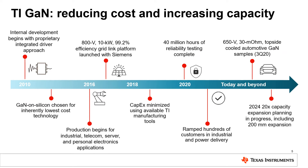TI has a long history with GaN, spanning more than 10 years, with a focus on reducing cost and increasing capacity. TI chose GaN on silicon to enable the lowest-cost, long-term technology, while leveraging existing tools as much as possible to minimize additional capex spending. Initial TI GaN products were first launched in 2016, which included a focus on 800-volt, 10-kilowatt grid-link converters in partnership with Siemens. Since then, hundreds of customers have engaged, ramping across multiple end equipments in industrial and power delivery sectors. This includes telecom rectifiers, server power supply units, charging piles for electric vehicles, AC-to-DC converters for factory automation, and integrated motor drive robotics, just to name a few.